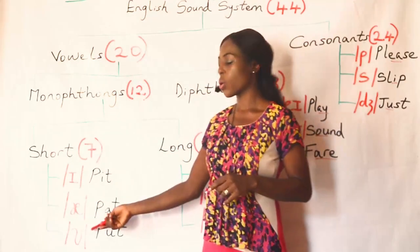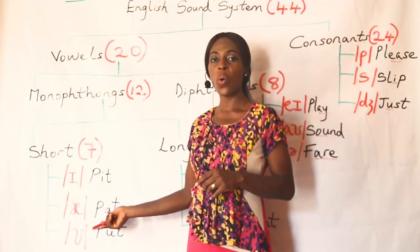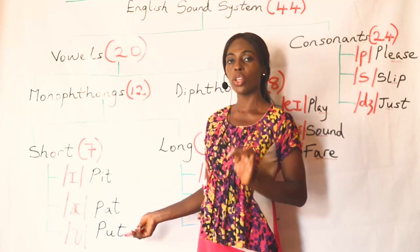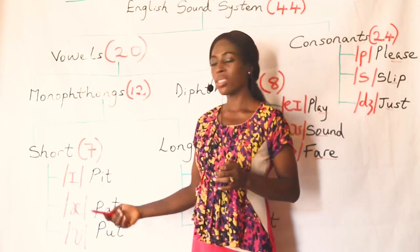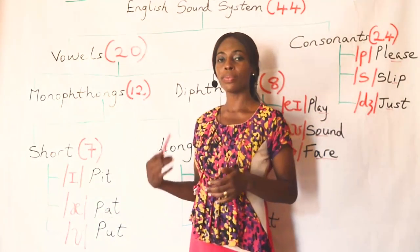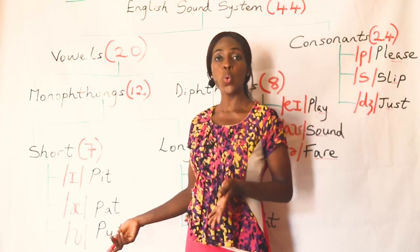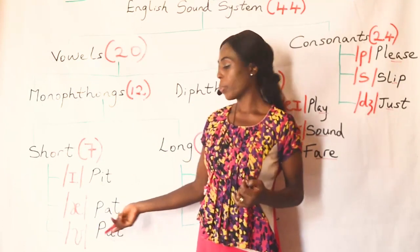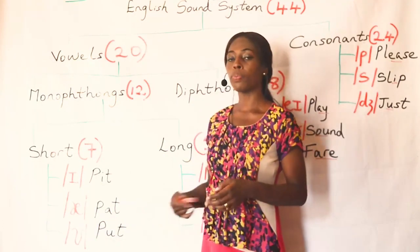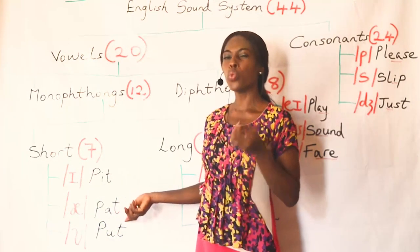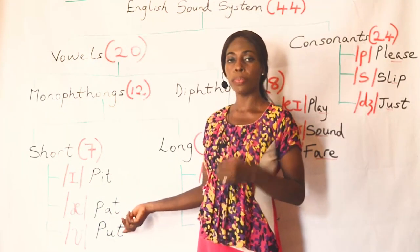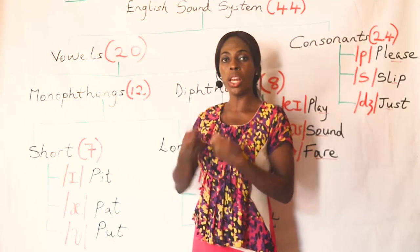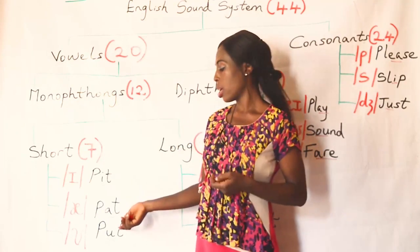Then we also have /ʊ/ — the O sound — as in the word 'put.' I noted this because some of my students confuse it with the /uː/ sound. This sound is not /uː/; it is /ʊ/. You have it in 'put,' so you don't say 'poot,' you say 'put.' Neither would you say 'pool' — you say 'pull.'